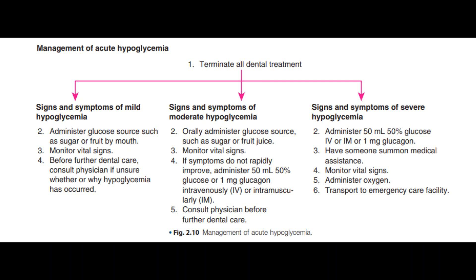For moderate hypoglycemia, the first step is to try to normalize blood glucose. If symptoms improve, you can administer further medication to maintain blood glucose. Give 50% dextrose, 50 mL, administered over three minutes. If that does not work, give intramuscular glucagon injection. Once symptoms improve, consult and reschedule.